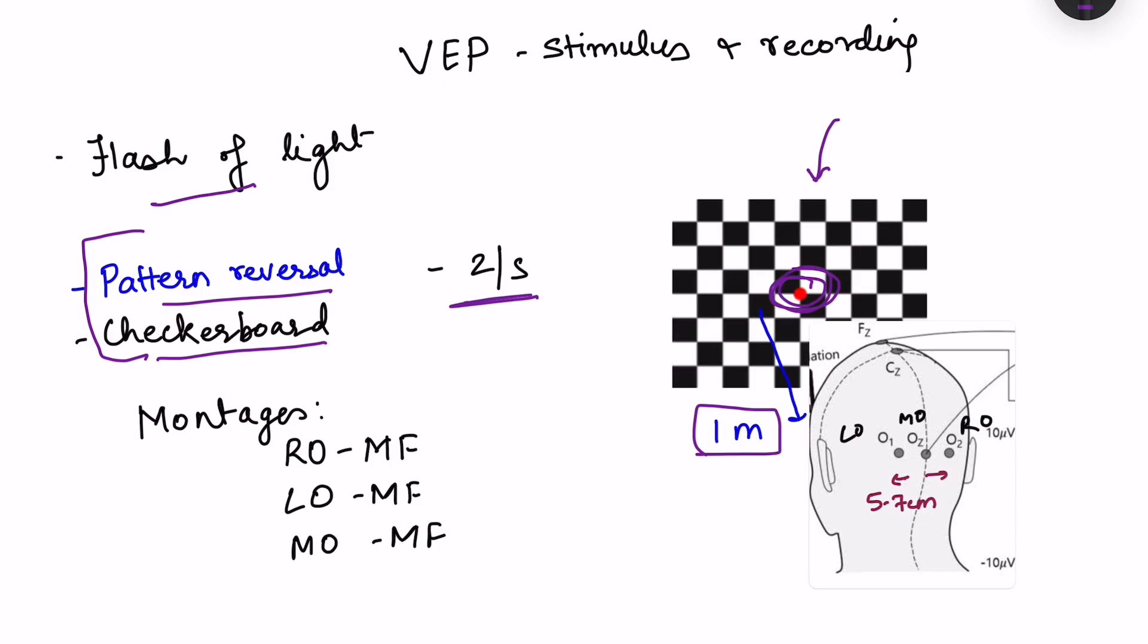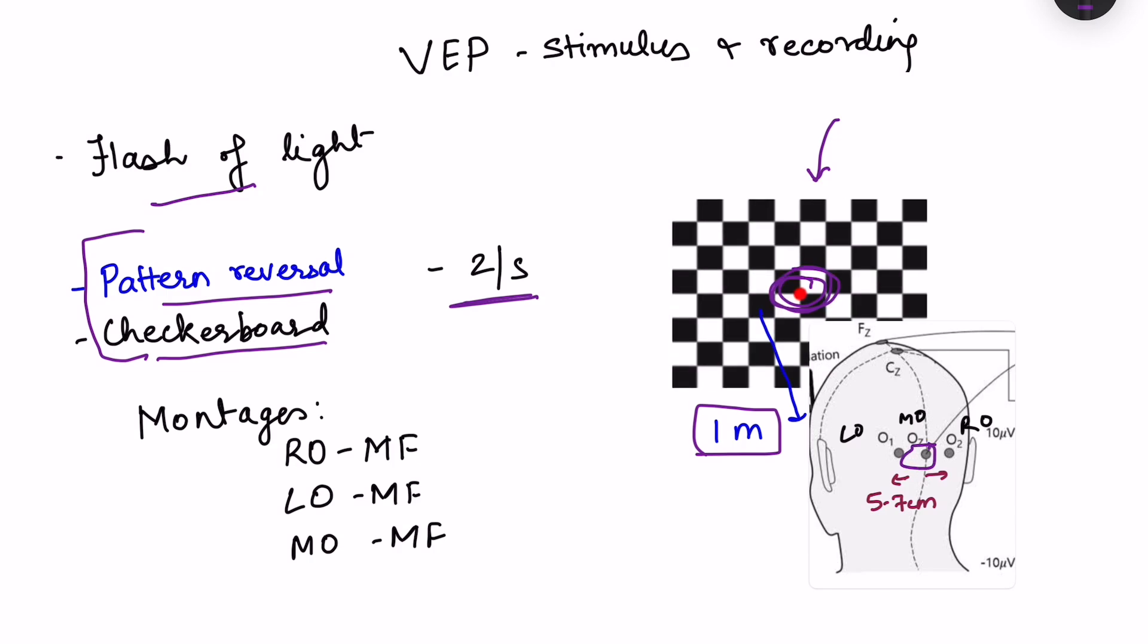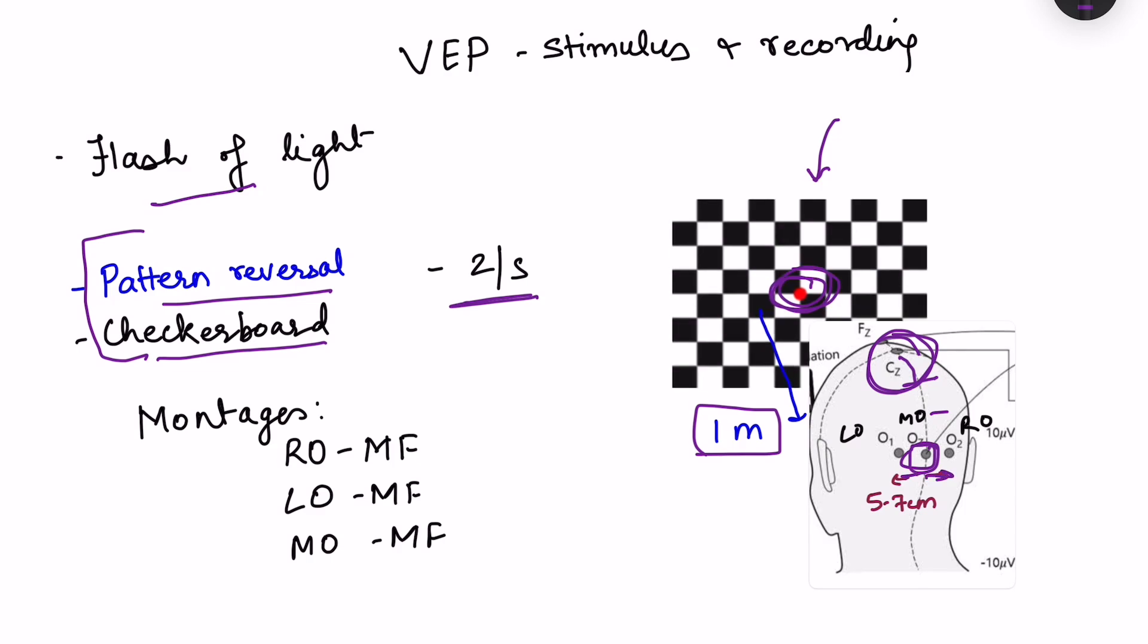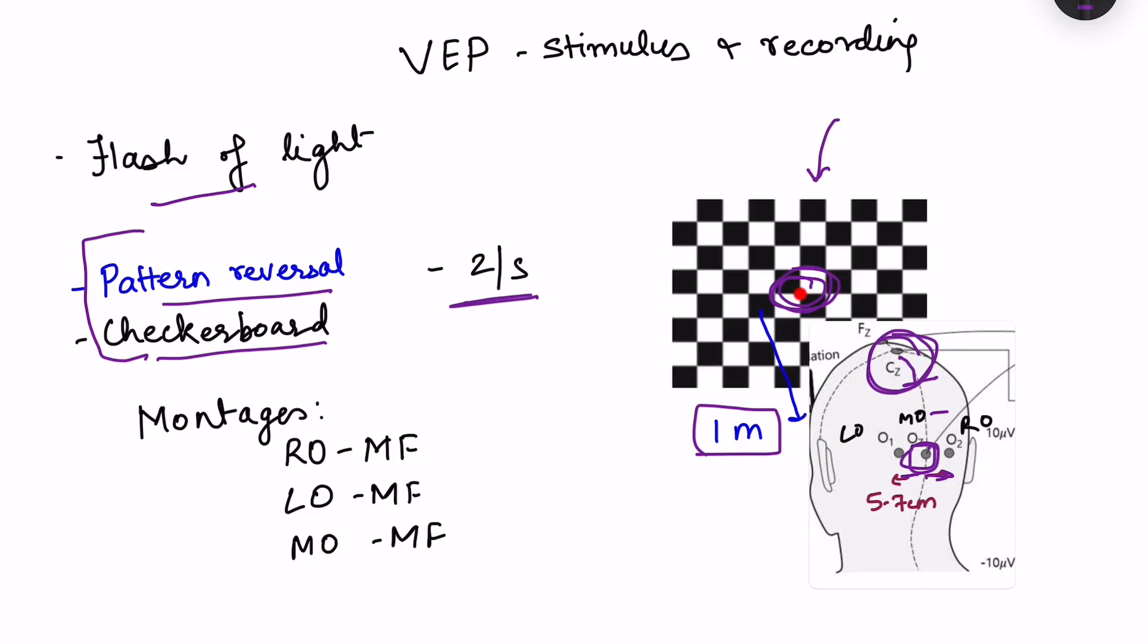Then for recording, the recording electrodes are placed on the scalp in the OZ area. This CZ area we discussed, that is the central zero point. Then we divide behind into 20, 20, and the 10th division. So last one is the occipital zero electrode. One electrode is kept at OZ area. Then 5 to 7 centimeter just on the left and right side of that in the parasagittal regions O1 and O2 are placed.